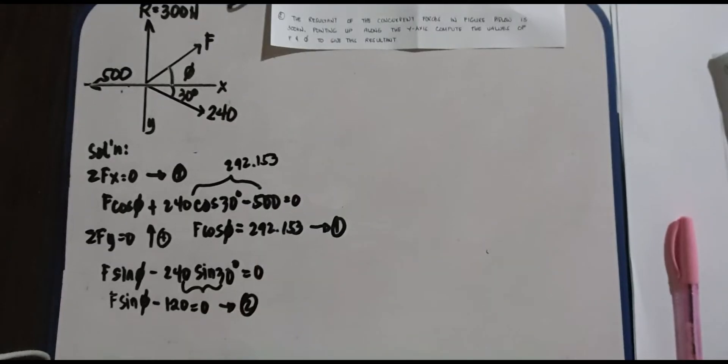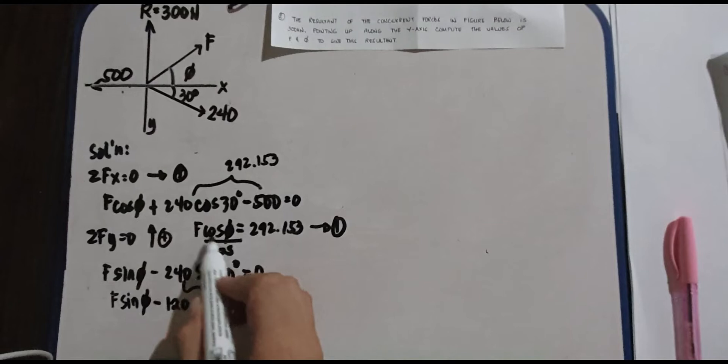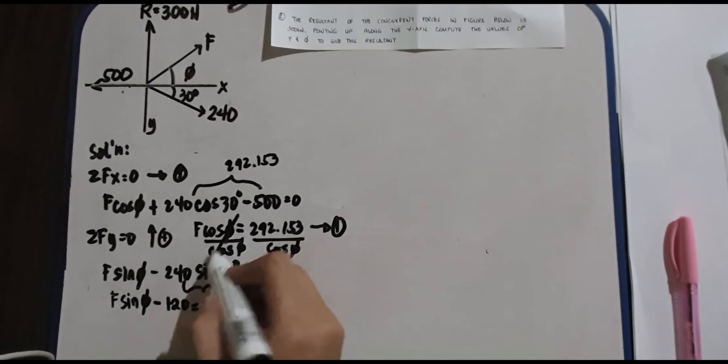This is your equation 1. Don't use this because it's not yet simplified. Actually, there's more to simplify there. If you want to divide this by cosine to get F, that's fine. Divide by cosine to find F.